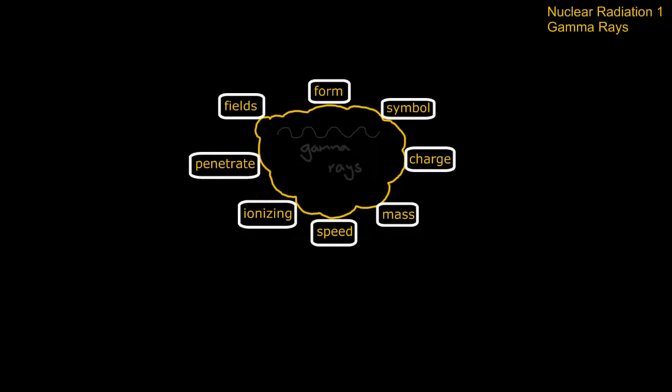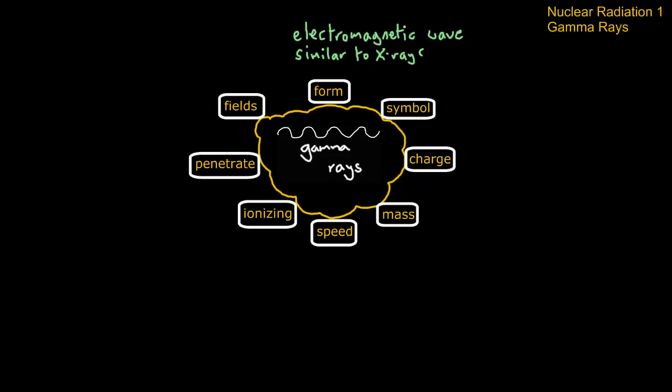So let's take a look at gamma rays and the form of these rays. They're an electromagnetic wave of very high frequency, very similar to x-rays. They have a very high frequency at the opposite end of the electromagnetic spectrum from radio waves.